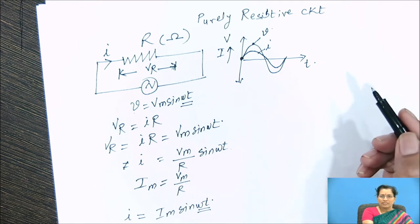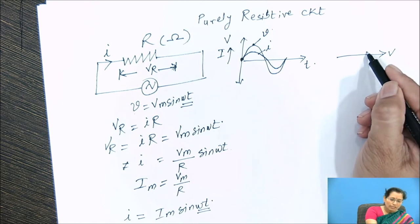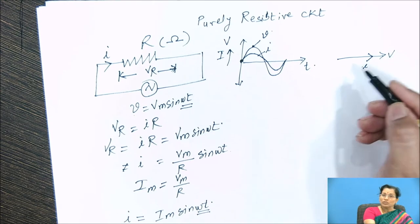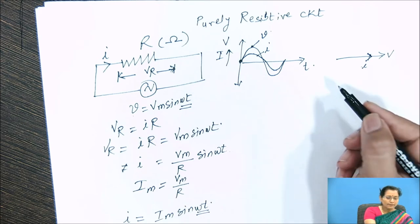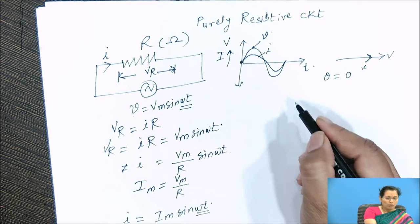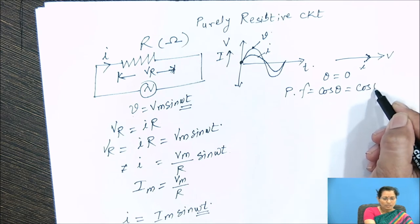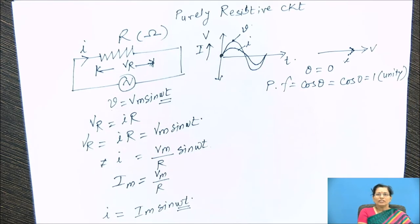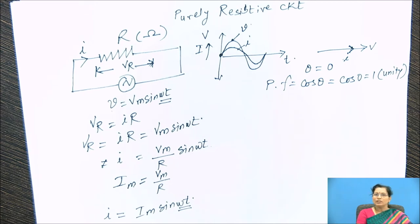We can draw the phasor diagram. Since voltage and current are both in phase, we draw them on the same phasor. Theta is zero. So the power factor for this circuit, that is cos theta, is given by cos 0 equal to 1. This is called unity power factor. For a purely resistive circuit, the phase difference between voltage and current is zero and the power factor is unity.